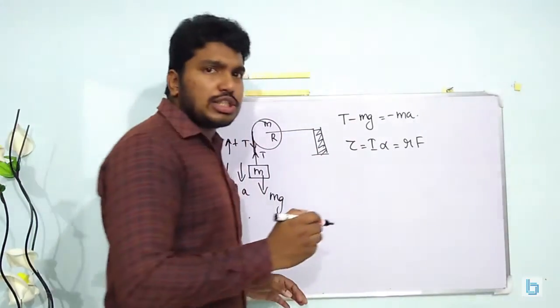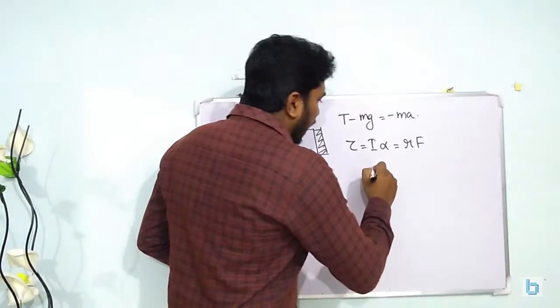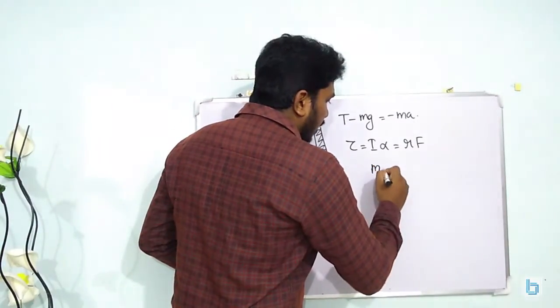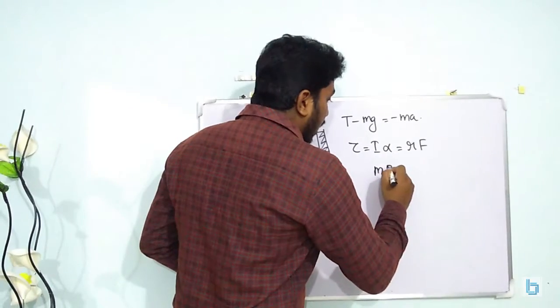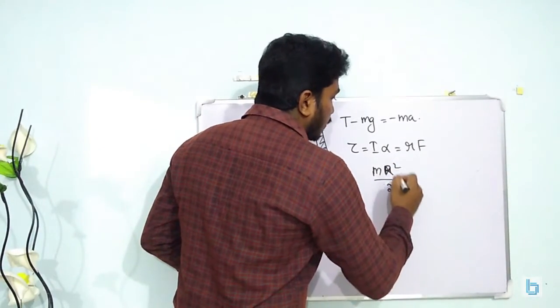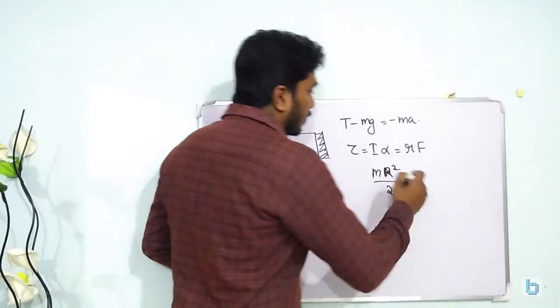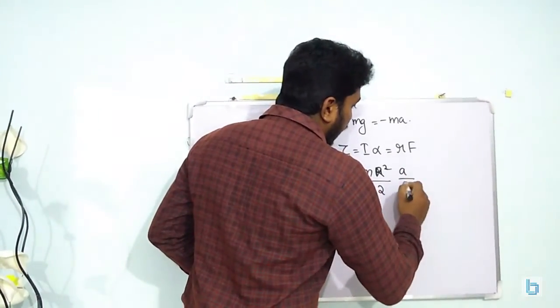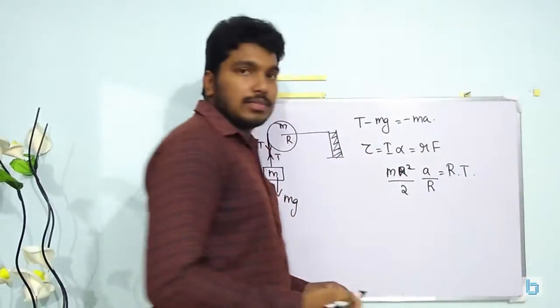So the moment of inertia of a disc about its axis is given by M R square radius is capital R. So capital R square by 2. Alpha can be written in terms of acceleration as A by R. That is equal to R into tension T.